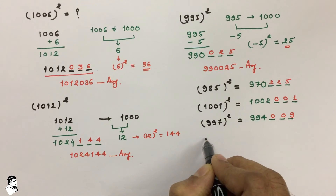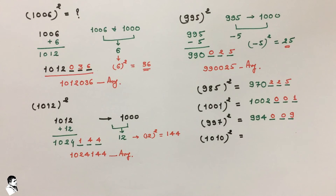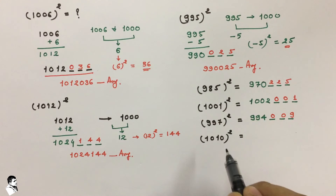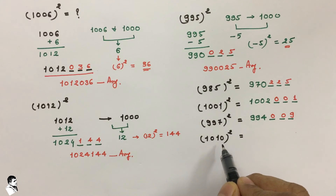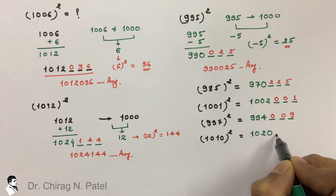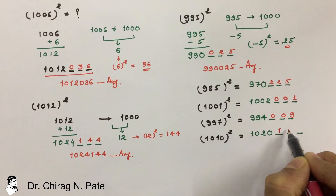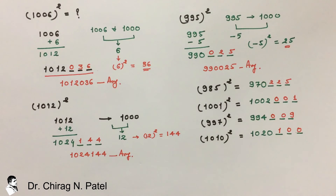Now take 1010 and find its square. Comparing 1010 with 1000, it is 10 more than 1000, so the difference is plus 10. We add 10 to get 1020, and leave 3 spaces. The square of 10 is 100, so we write 100 in those 3 spaces. The final answer is 1020100.